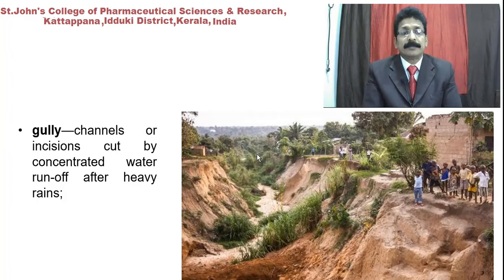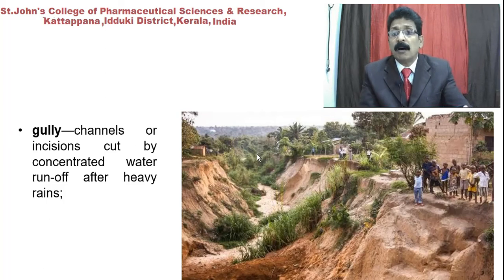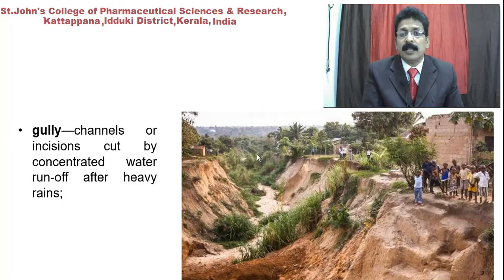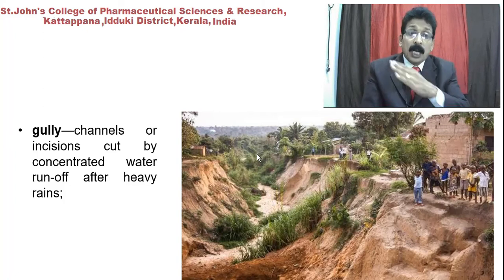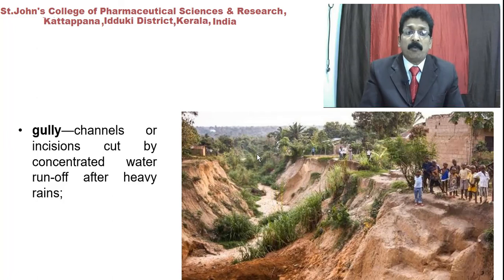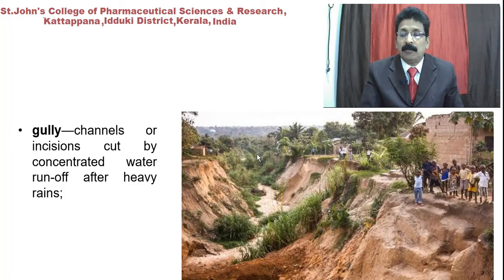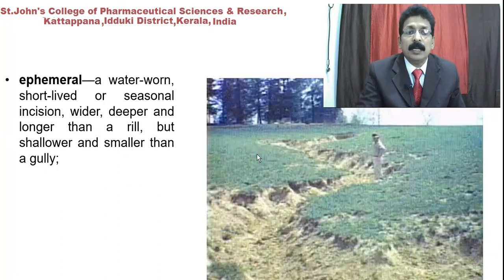Gully erosion — you can see in the picture how deep it goes, caused immediately by heavy rain or a natural calamity. It is a channel or incision cut by concentrated water after high water flow runoff. After heavy rains, this type of gully can occur in cultivated land, especially on slopes. You can see how deep it is and how it takes away the soil.